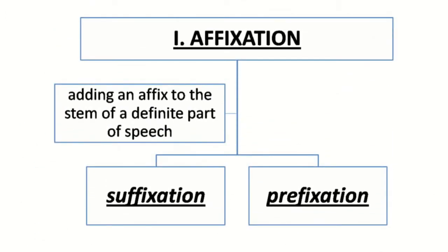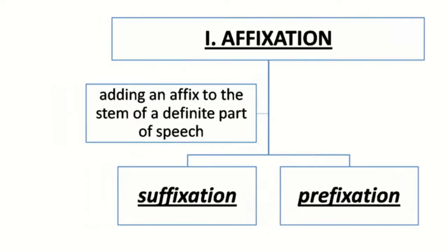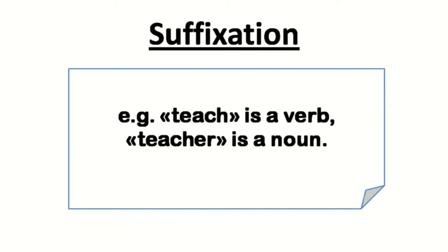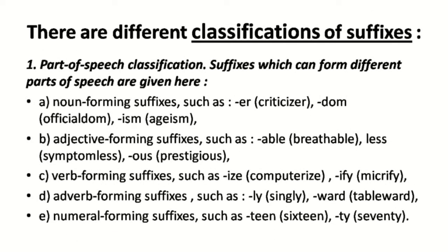The first major type is affixation. Affixation is adding an affix to the stem of a definite part of speech. Affixation has two subtypes: suffixation and prefixation. Suffixation is the formation of a word with the help of a suffix. For example, 'teach' is a verb and 'teacher' is a noun — the noun was formed with the help of the suffix '-er'. There are different classifications of suffixes, the first being the part-of-speech classification.